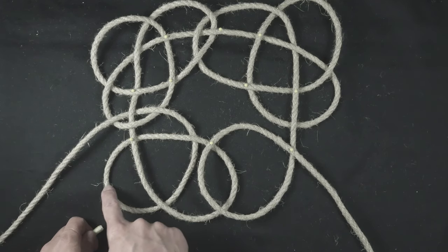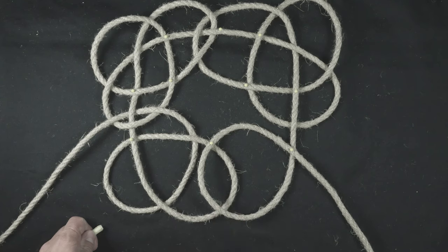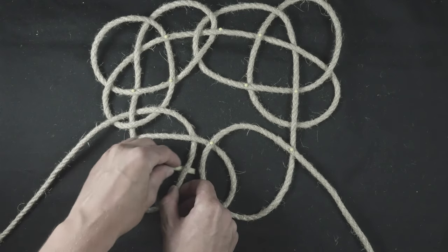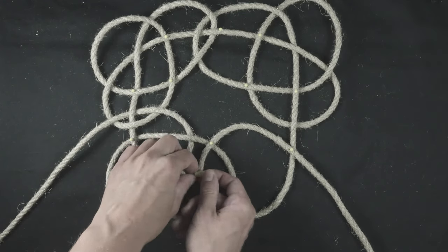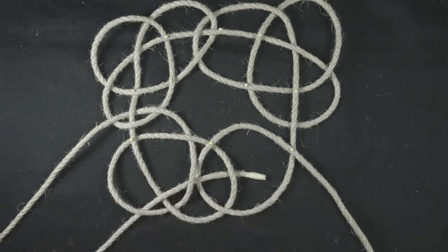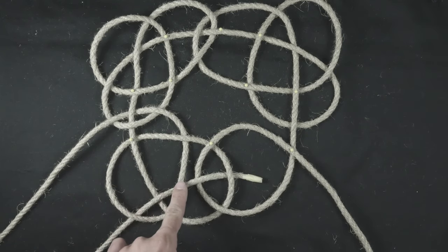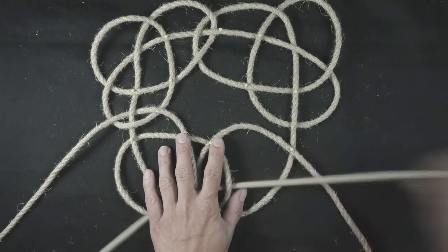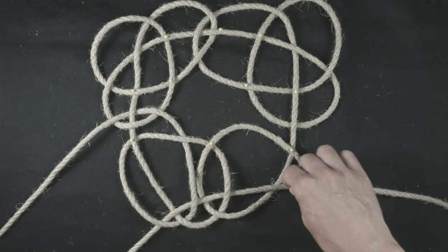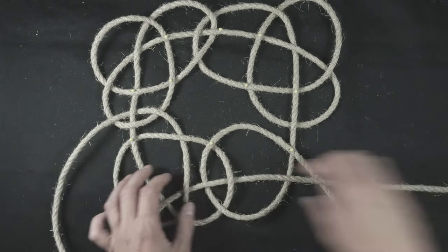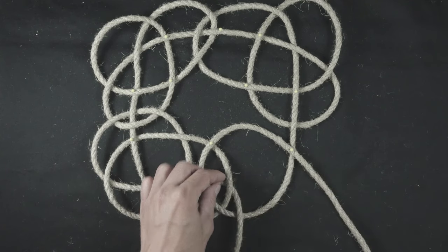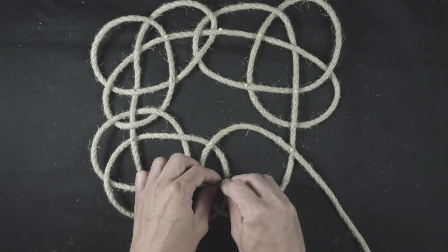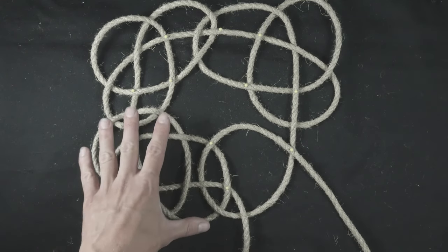Like this. Now we weave through these strands: under, over, under, over and under. So under, over, under, over, under. This completes the bottom left corner.